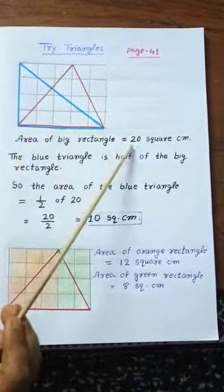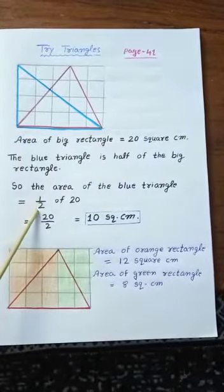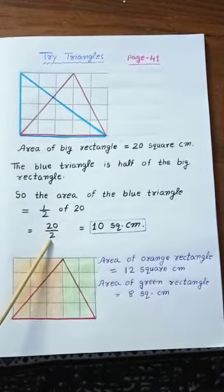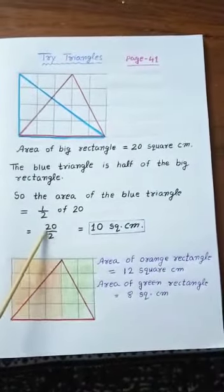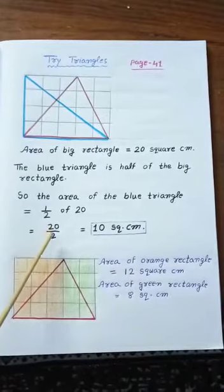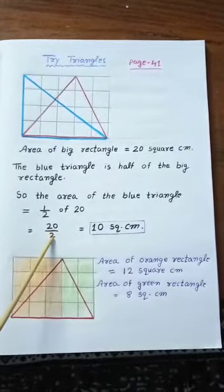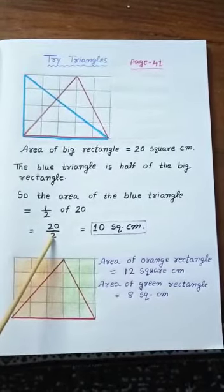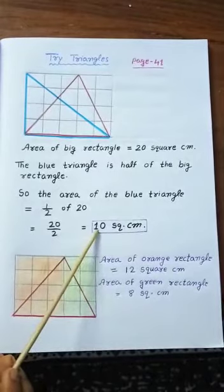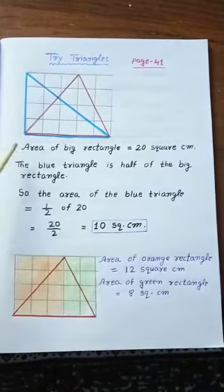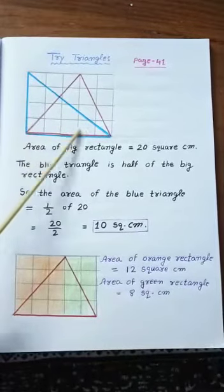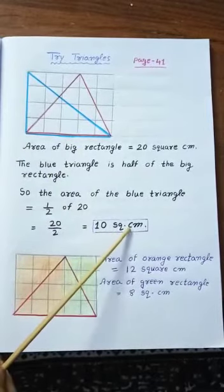The area of the big rectangle is 20 square centimetres. Half of 20 means 20 divided by 2. We read the table of 2: 2 tens are 20, so the answer is 10. The area of the blue triangle is 10 square centimetres.